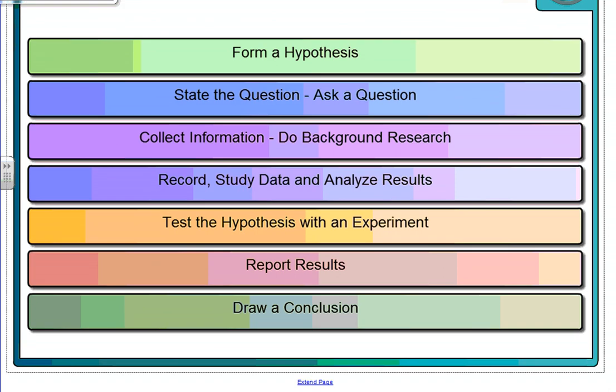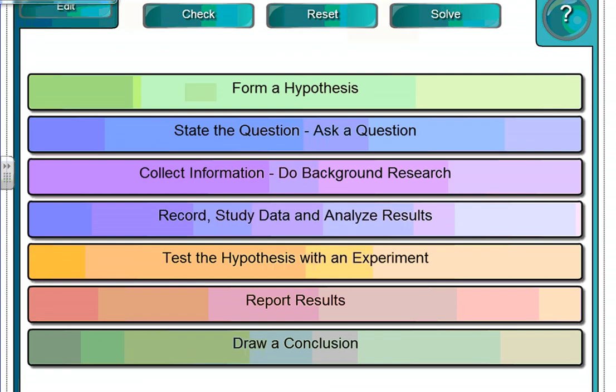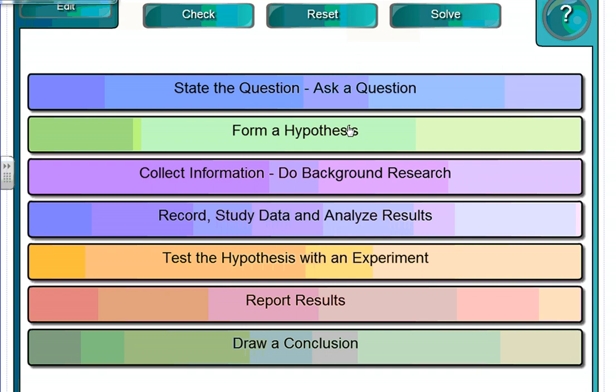Moving on to the next and final page, the scientific method. What could be the order of the scientific method? Put these in order. Is it form a hypothesis, state the question and ask a question, collect information, do background research, record, study and analyze data, test the hypothesis with an experiment, report results, or draw a conclusion? Which comes first? If you guessed ask a question, you are 100% correct. We have to start with a question. Why is a rainbow the way it is? How does the rear end posi track on a plymouth work? It just does. Start with a question.